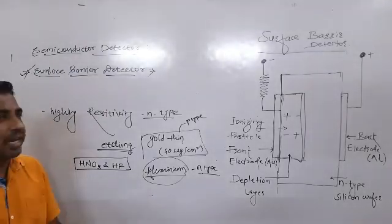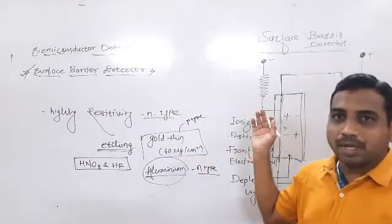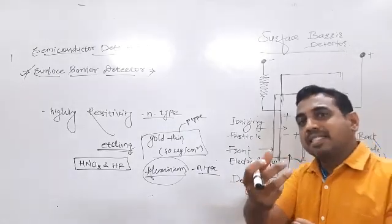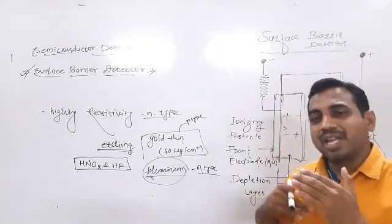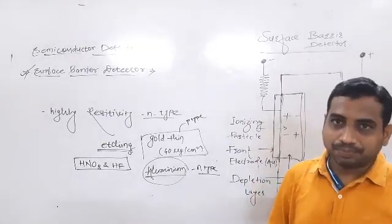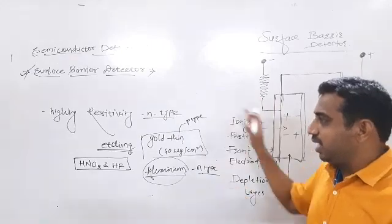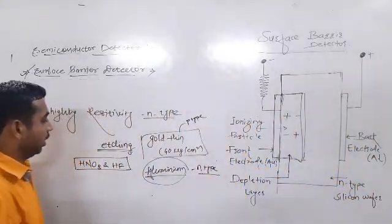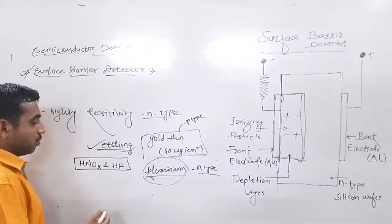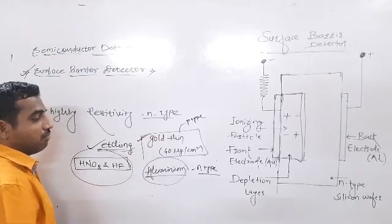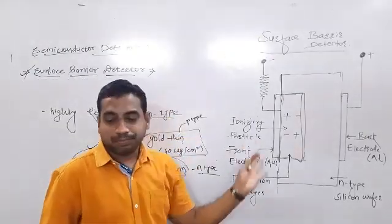We have seen this principle before. When the incident particle has sufficient energy — the maximum energy required — it creates an electron source. After that, an electric pulse is created, and with the help of that electric pulse we count and detect the particles. The high-resistivity detector and the etching process are both key parts of this construction.